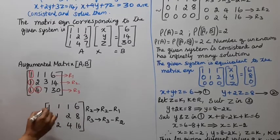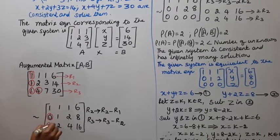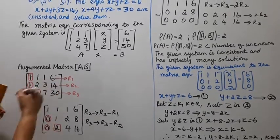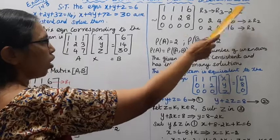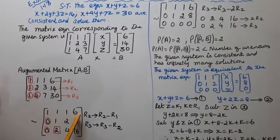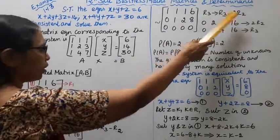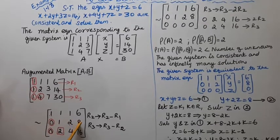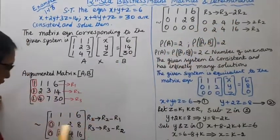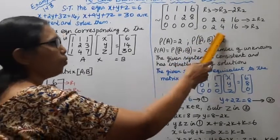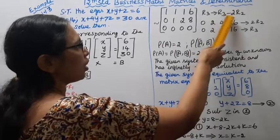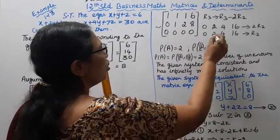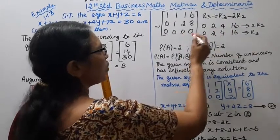Now we apply R3 tends to R3 minus 2R2. R2 is [0, 1, 2 | 8] and 2 times R2 is [0, 2, 4 | 16]. So R3 becomes: 0 minus 0 = 0, 2 minus 2 = 0, 4 minus 4 = 0, 16 minus 16 = 0. The third row becomes all zeros.